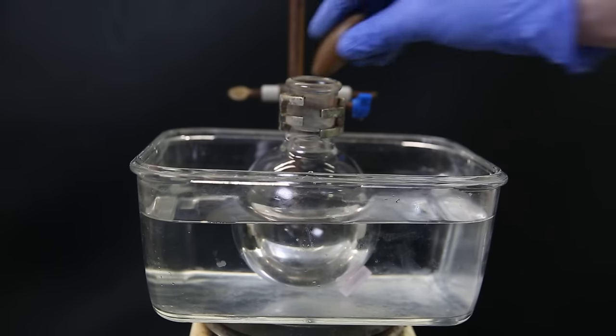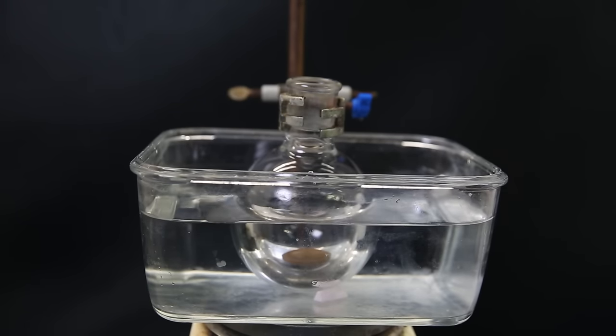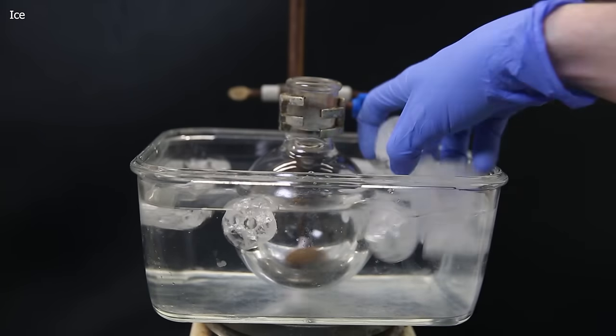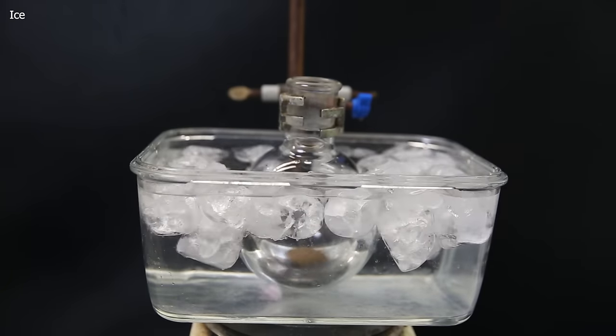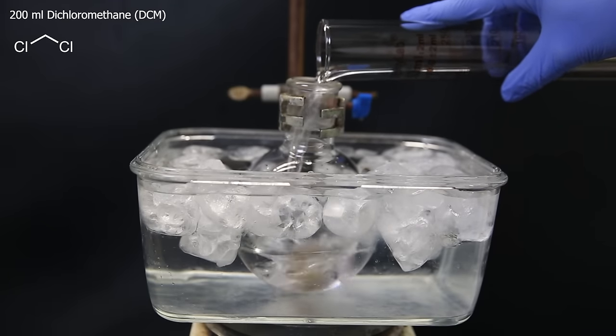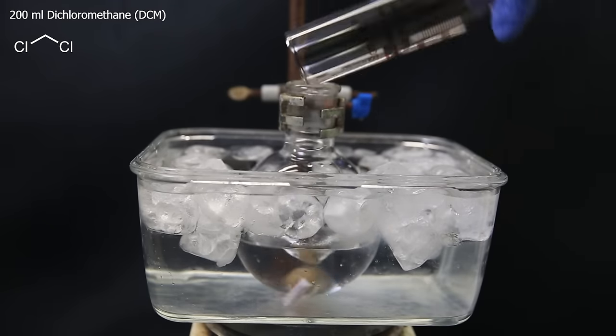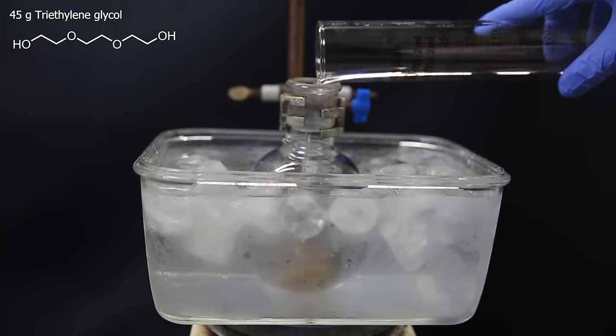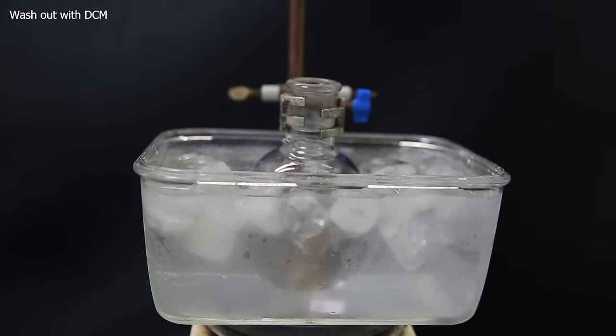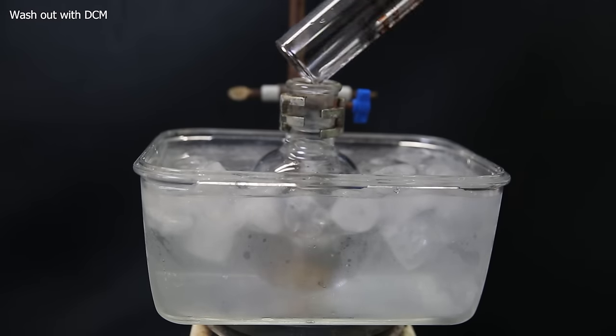To get started, I set up a flask in a water bath, and add a stir bar, then I add a bunch of ice into the water to cool this reaction. As a solvent, I add 200ml of dichloromethane, and then 45g of triethylene glycol as the first reagent. I also wash out the cylinder with some DCM, since the triethylene glycol is quite viscous.